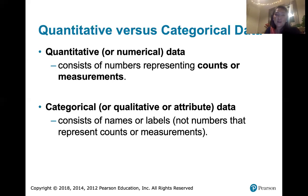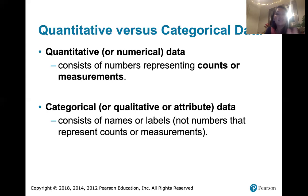So categorical data consists of labels, and quantitative data is numerical data. But that number has to represent something measured or something counted. If it's measured or counted, it's quantitative. If that number actually represents a label or a name, then it's still categorical.